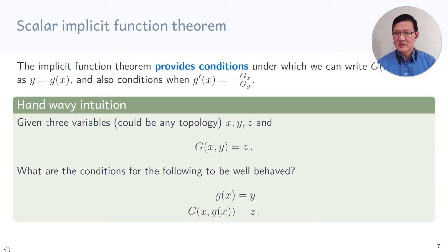So the scalar implicit function theorem provides conditions when we can write the function G of xy explicitly in terms of y as g of x. And it also can provide conditions when we can compute the function g prime in terms of the ratio of two partial gradients.